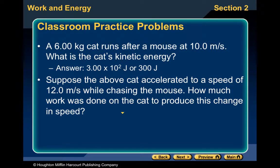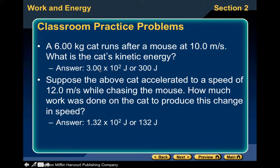Suppose the above cat accelerated to a speed of 12 meters per second while chasing the mouse. How much work was done on the cat to produce this change in speed? Remember, net work equals the change in kinetic energy. Find the final kinetic energy by taking one-half times the mass times the velocity squared, subtract the known initial energy, and you would get 132 joules.